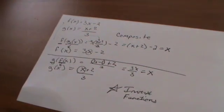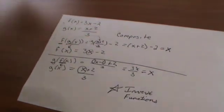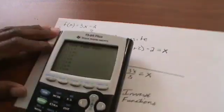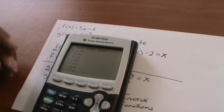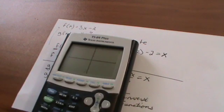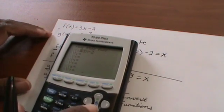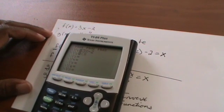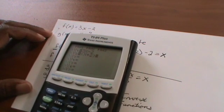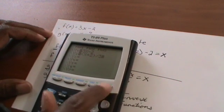A convenient way of determining whether two functions are inverse of each other is by graphing them — this is often a faster way. For Y1, I'll plug in what F of X was: 3X minus 2. Keep in mind that's the F of X. For the second Y, I'll put parentheses around the numerator because I want to make sure all of it is divided by 3 — X plus 2, all of that, divided by 3.